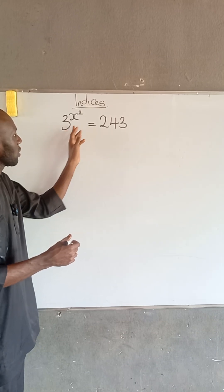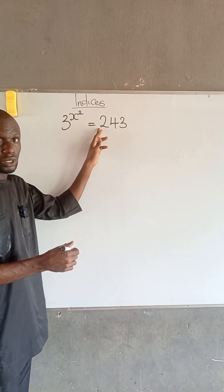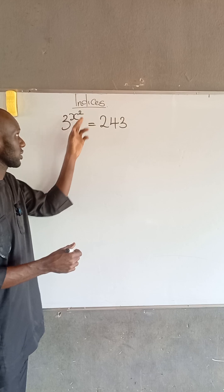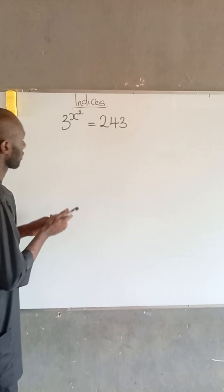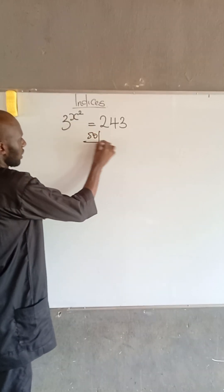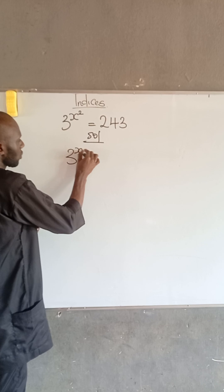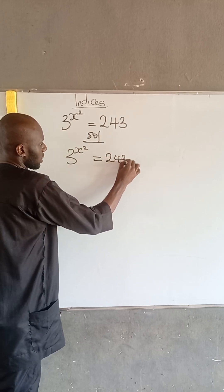So, we are given that 3 to the power of x squared is equal to 243. We are asked to find the value of x. So, we have it that 3 to the power of x squared is equal to 243.